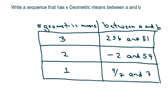Hi, everyone. We're going to write a sequence that has x number of geometric means between a and b. These are the three problems that we're going to do, so I just wanted to write them out, and let's get started.